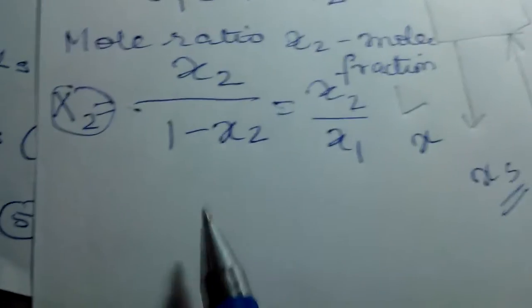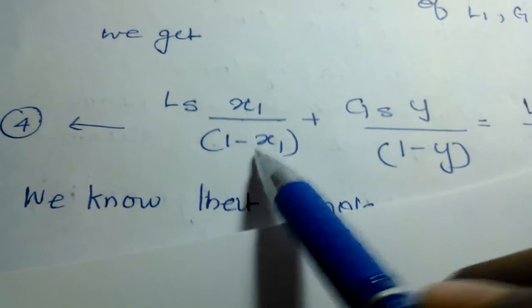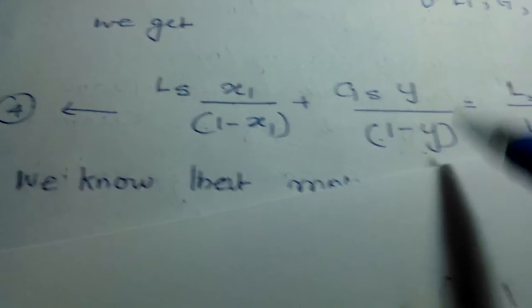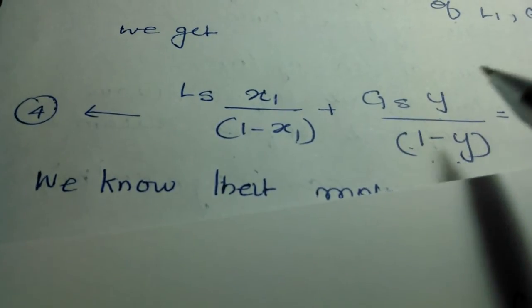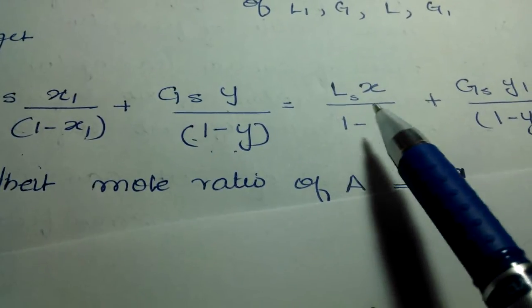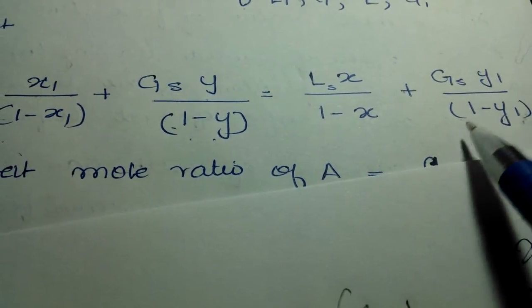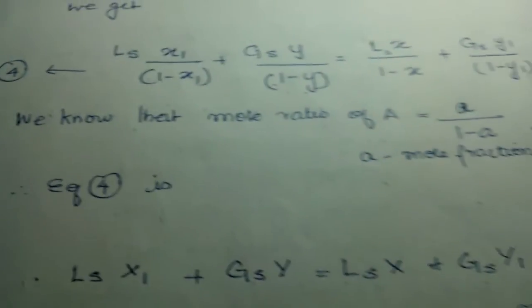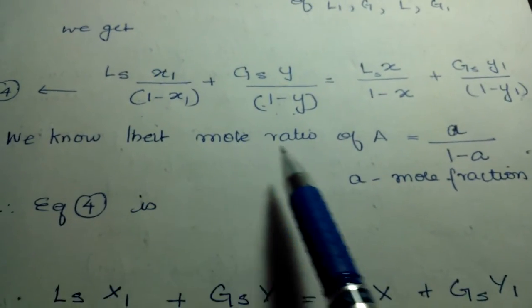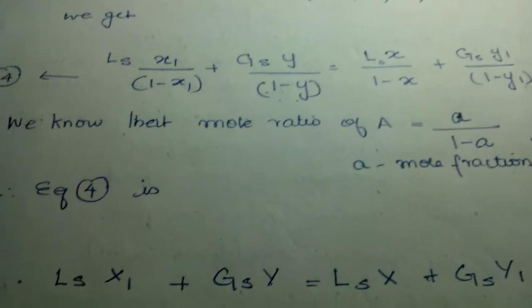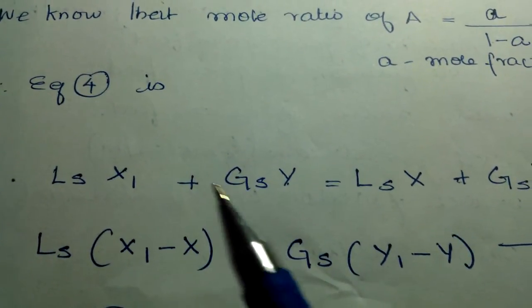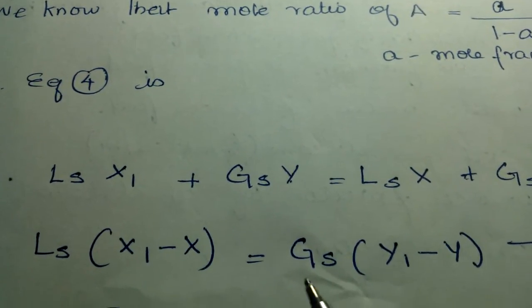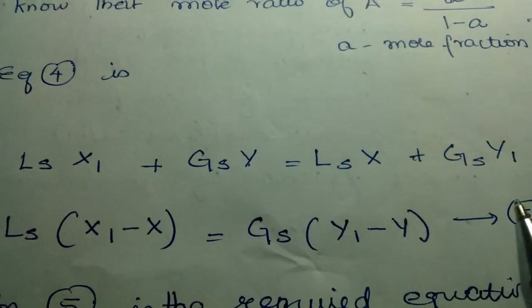Based on this equation, you have x1/(1-x1) and y/(1-y). I'm substituting: LS into X1, GS into capital Y, LS into capital X, and GS into Y1. This is the equation we get. On grouping all the LS onto one side, we get X1 minus X, and GS on one side gives us Y1 minus Y. This is the equation required.